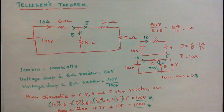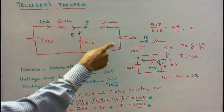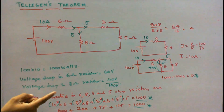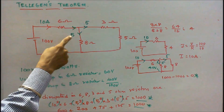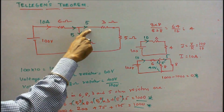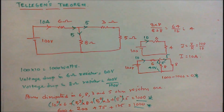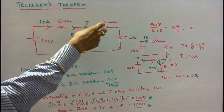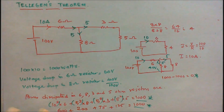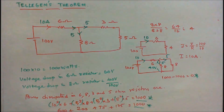Now we calculate the power dissipation in the 6 ohm, 8 ohm, 3 ohm and 5 ohm resistors. The currents are: 10 amps through the 6 ohm, and 5 amps through each branch of the parallel section. Using I²R: 10² × 6 = 600; 5² × 8 = 200; 5² × 3 = 75; 5² × 5 = 125. Total power dissipated = 600 + 200 + 75 + 125 = 1000 watts. Power supplied by the source equals 1000 watts. Power dissipated equals power supplied by the source. The algebraic sum of power supplied and power dissipated equals zero: 1000 minus 1000 equals 0.